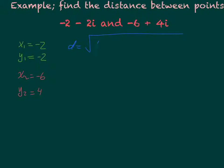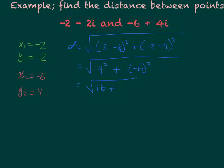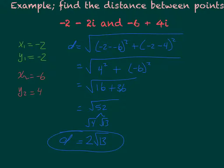So I can find my distance: the square root of negative 2 minus negative 6 squared plus negative 2 minus 4 squared. Negative 2 plus 6 is positive 4 squared, and negative 2 minus 4 is negative 6 squared, giving me the square root of 16 plus 36, which is the square root of 52. I simplify that to the square root of 4 times the square root of 13, which is 2 square roots of 13. So the final distance between the two complex points is 2 square roots of 13.